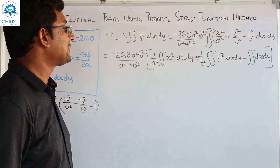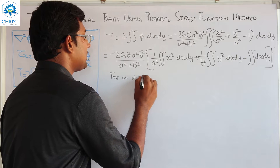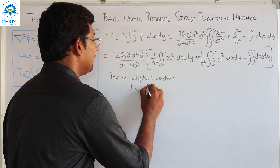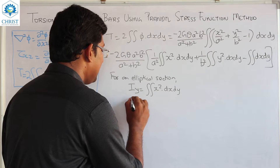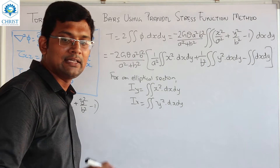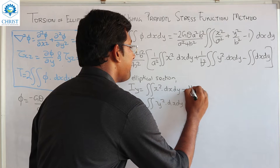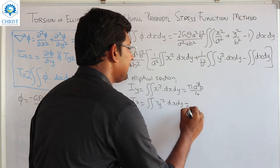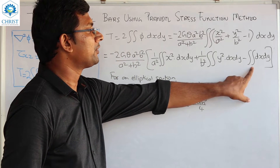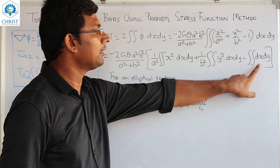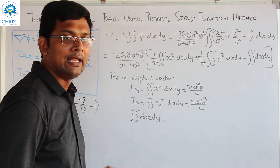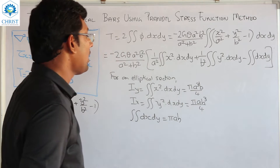For an elliptical section, we recognize the moment of inertia terms. I_y = ∫∫x² dx dy = πa³b/4, and I_x = ∫∫y² dx dy = πab³/4. The last term, ∫∫dx dy, is simply the area. For an ellipse, the area equals πab.